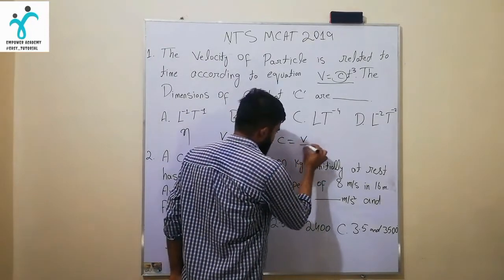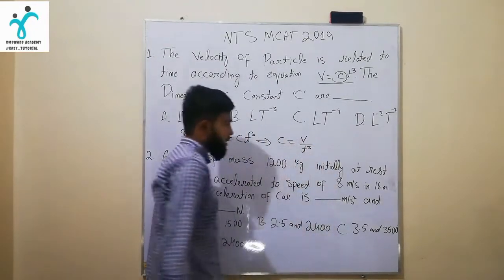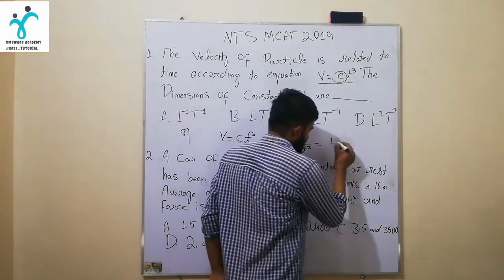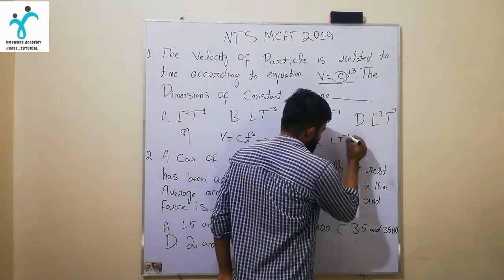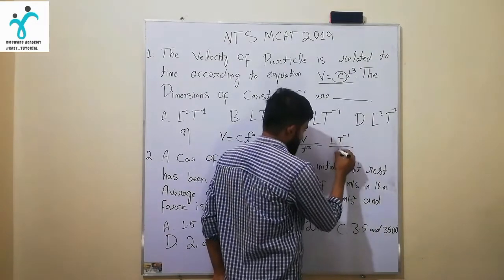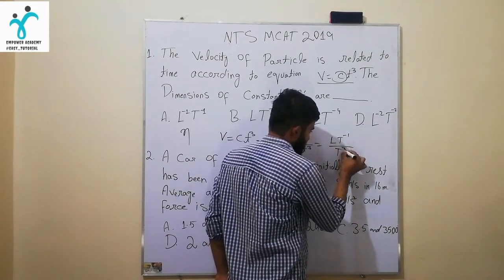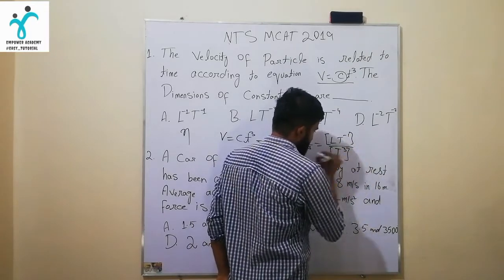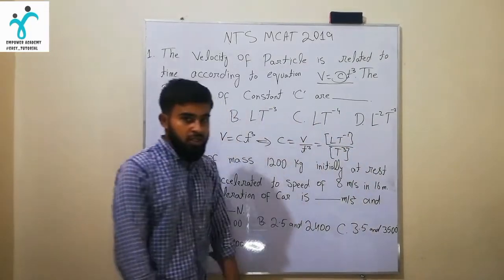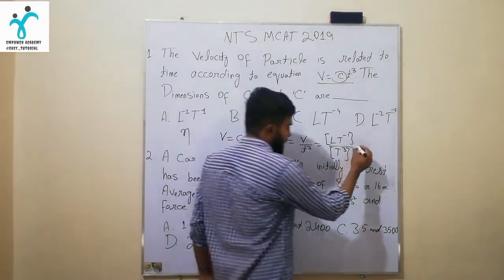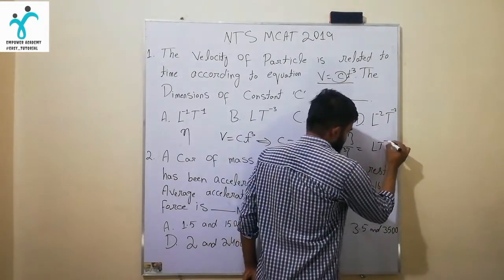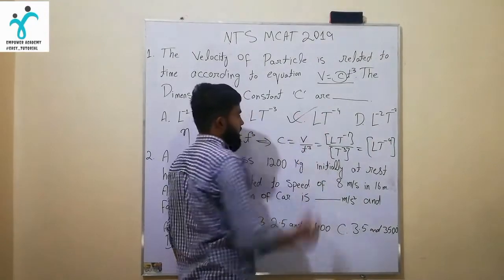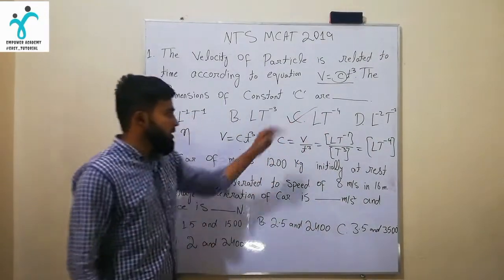Now we know that C equals V over TQ. The velocity dimension is LT⁻¹, the time dimension is T, and the cube is T³. Here we have the physical quantities of T with the same dimensions of T, which is Option C. Option C is the correct option.